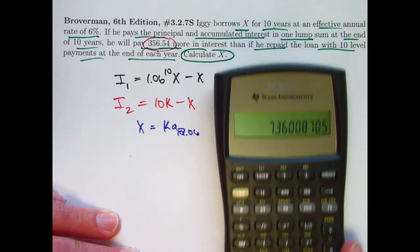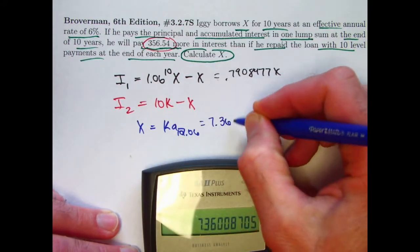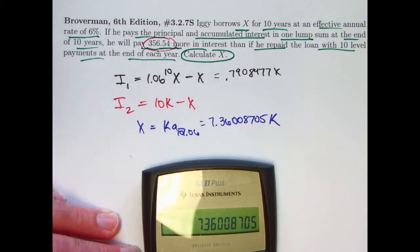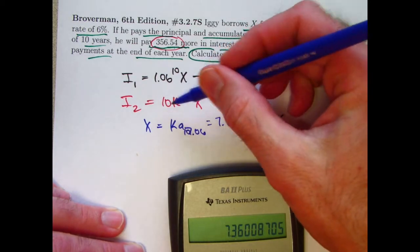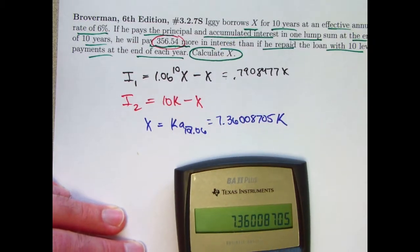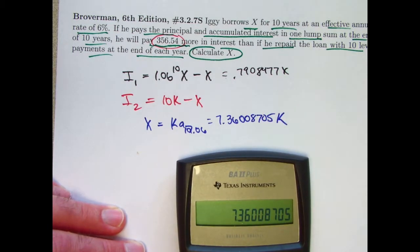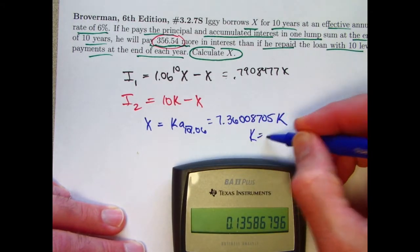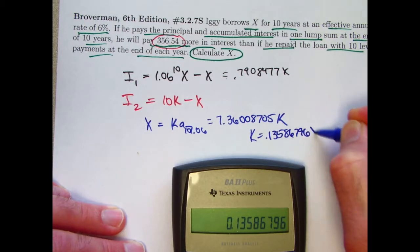The value of A is about 7.36. Once again, I'll go ahead and write down all the decimal places. We want to ultimately substitute in for 10K here in terms of X. So, let me solve this equation for K. I would divide both sides by 7.36. In other words, take its reciprocal and get K is 0.13586796 times X.